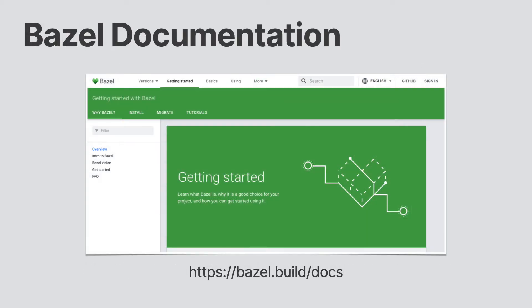Your next best place is the documentation. Seriously, read the fine manual. And once you have an understanding of the documentation, then read the documentation provided by the language rules themselves. Oftentimes, the rules repositories will contain a folder for documentation and another folder for working examples. Those examples will go a long way in showing how to actually build a particular target.